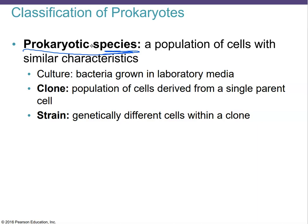When we are growing an isolated colony, we're producing a clone. We're starting out with a single parent. A clone is a population of cells derived from a single parent. That single parent started out on our petri dish, a whole colony grew, and that is a clone. They are all genetically identical.